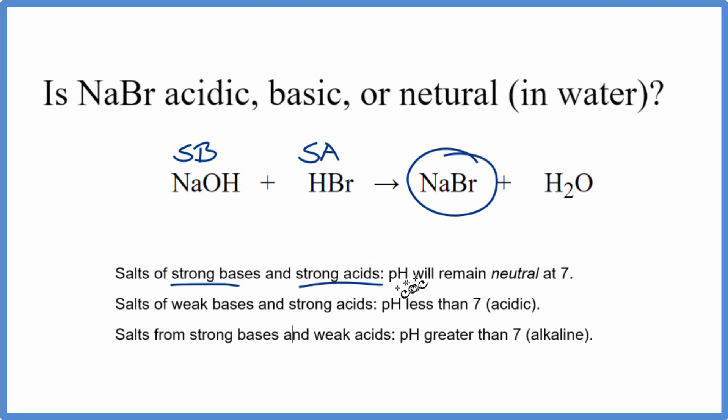Because we have a strong base and a strong acid, that pH is going to be neutral. It's going to be at 7. So according to our rules here, when we have NaBr dissolved in water, solution will be neutral.